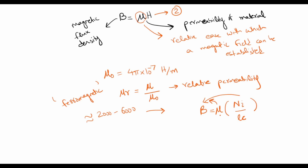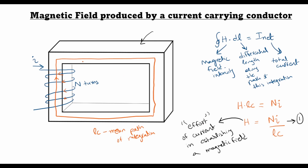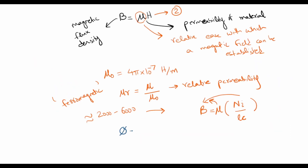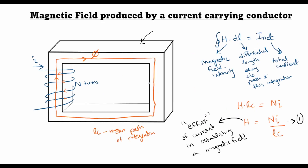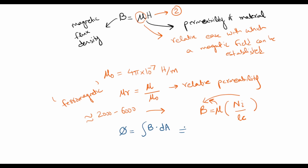We would like to express B in terms of the magnetic flux flowing through this core. Magnetic flux is given as the surface area integral of B. Now if the magnetic flux density vector is perpendicular to the differential area dA and its value is constant over this area, then this expression can simply be written as B dot A. Let's call this equation 4 and the previous one equation 3.